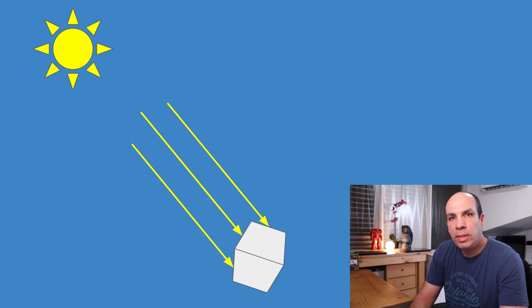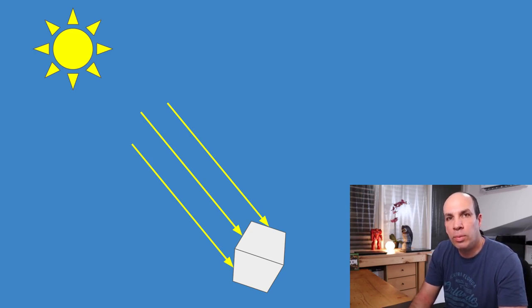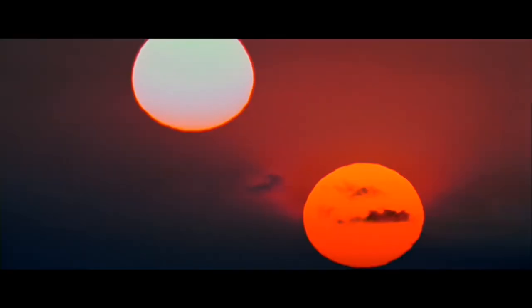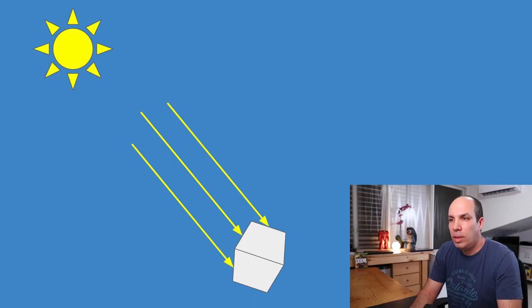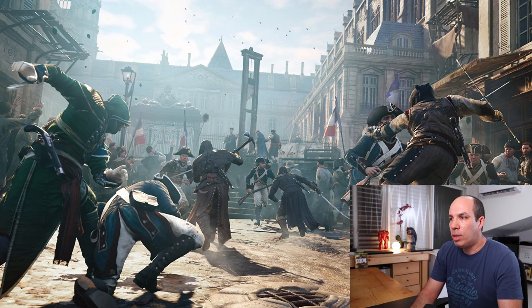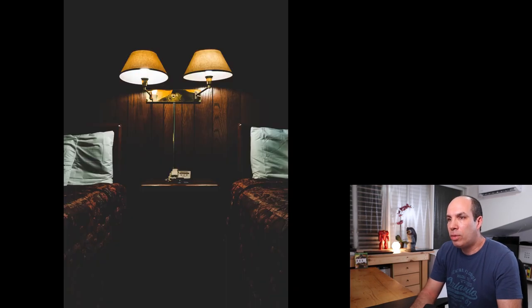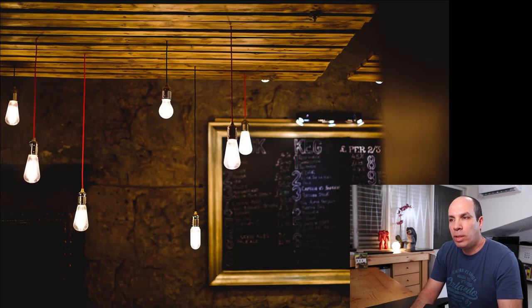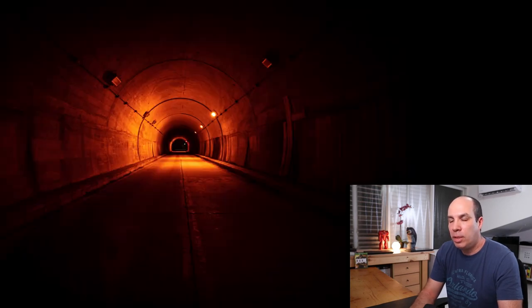In most cases one directional light is enough because there's only one sun. The directional light is good for outdoor scenes mainly, but for indoor scenes you would probably prefer to use a point light to model stuff like light bulbs or table lamps, anything like that.